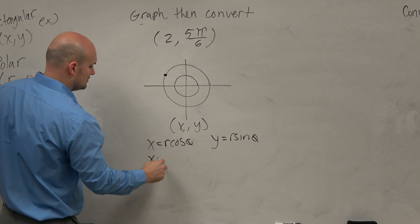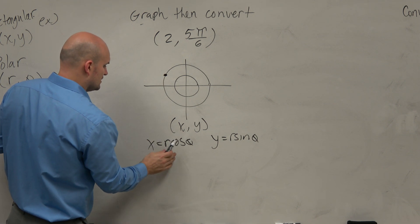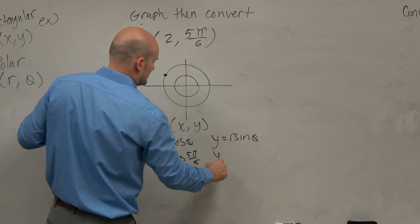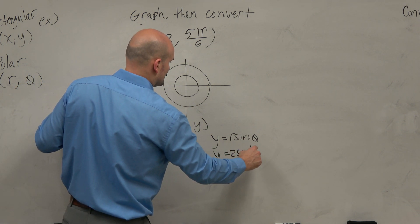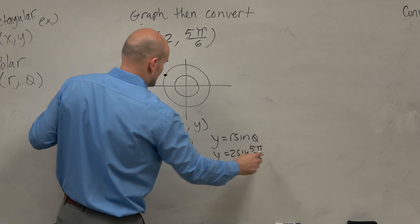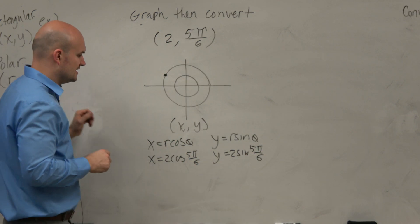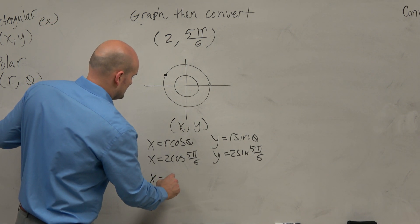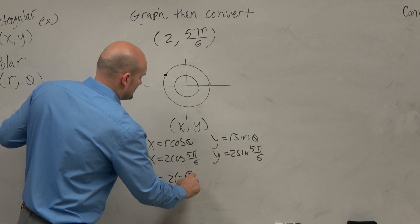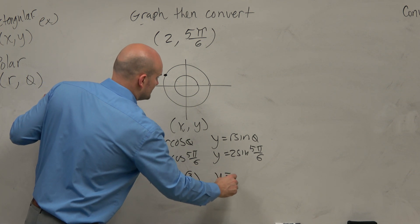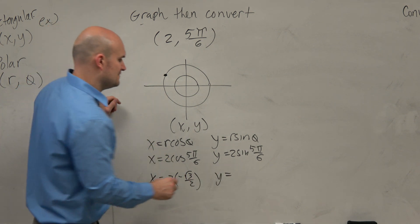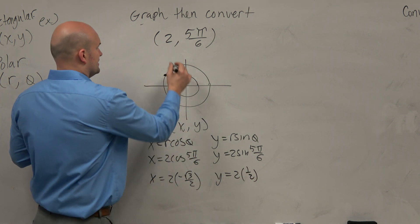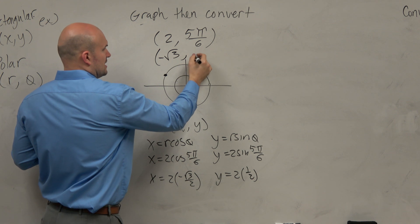Well, we have r, 2, and cosine of 5π over 6. And r is 2 times sine of 5π over 6. So 5π over 6 is going to be in the second quadrant, so it's negative square root of 3 over 2. And then y is positive 1 half. So it looks like I'm getting a coordinate point negative square root of 3, comma 1.